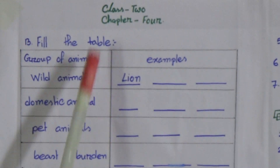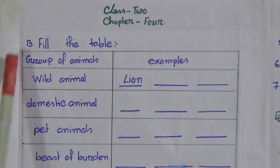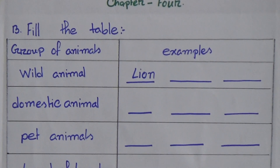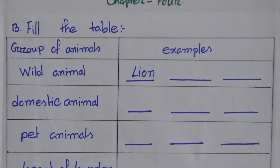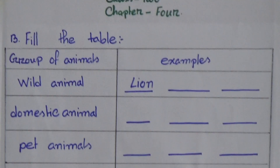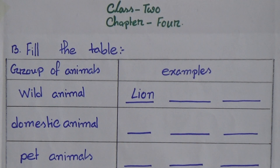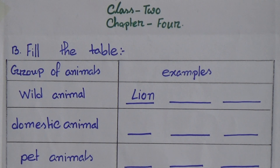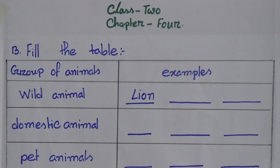Our today's topic is Chapter 4, Exercise Number B. In our previous class, we completed reading this chapter and also completed Exercise Number A. Today we will do Exercise B, C, D, and Word Meaning and One Word Answer. Now let's go.